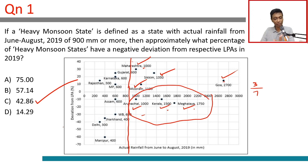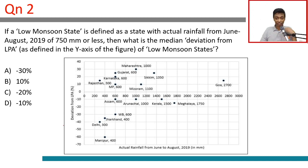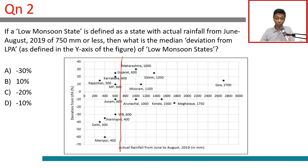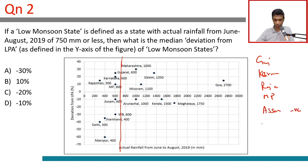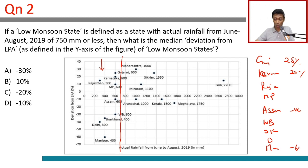Question 2: If a low monsoon state is defined as a state with actual rainfall from June to August of 750mm or less, what is the median deviation from LPA of low monsoon states? Arranging deviations in order from highest to lowest: Gujarat (+25%), Karnataka (+20%), Rajasthan, MP, Assam — which slips into negative territory — then West Bengal, Jharkhand, Delhi, and Manipur at the bottom with minus 60%.